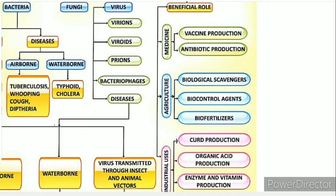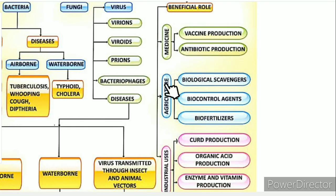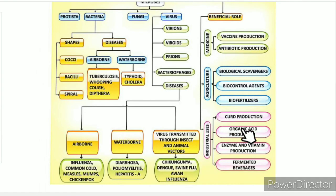In this video on Applications of Microbes Part 2, we covered the industry applications — including fermented beverages, curd production, organic acid, enzyme and vitamin production — as well as vaccines, antigens, and antibiotics produced by microorganisms. The next video will cover microbes and diseases. Thank you.